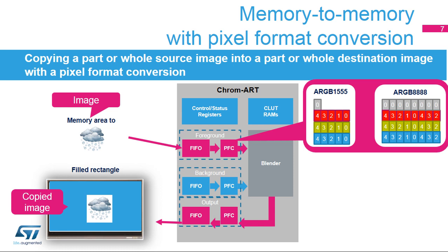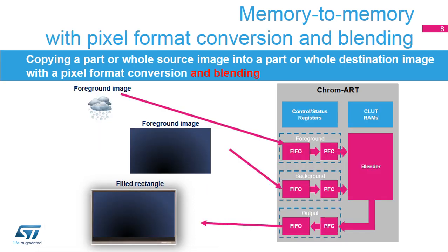It can copy an RGB 565 image into an RGB 888 image without having to use the CPU. Memory to memory mode with pixel format conversion and blending is used to blend a part or whole source image with a part or whole destination image with a different pixel format. This is widely used to draw bitmap icons having transparency or fonts.